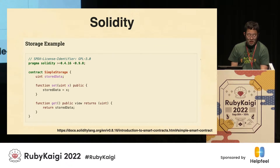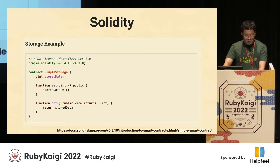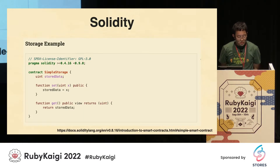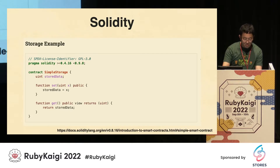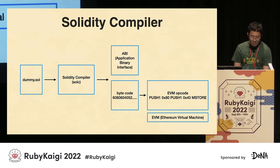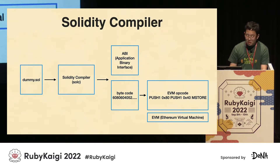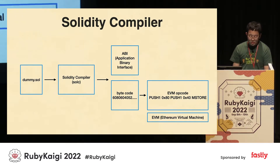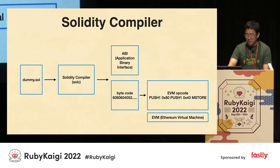Smart contracts are written in a language called Solidity. Here we define get and set functions. The source code written in Solidity is compiled by the Solidity compiler called SolC and runs on the Ethereum Virtual Machine. SolC is also used in eth.rb. After compiling, ABI and bytecode and opcode can be generated. Finally, it is executed on the EVM, the Ethereum Virtual Machine.